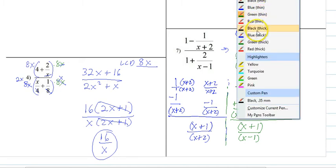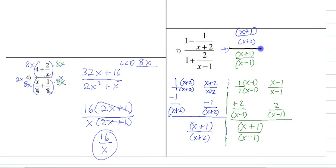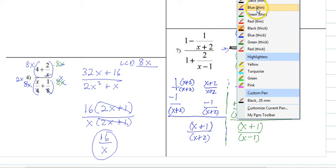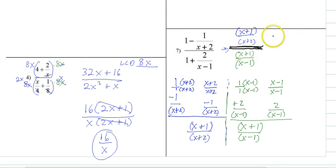Put that one in a nice thick line. So that's our division line right there. So when we divide these, we're basically going to flip the bottom. So it becomes (X+1)/(X+2) times this one flipped. So (X-1)/(X+1), which we can then cancel and create an answer of (X-1)/(X+2).